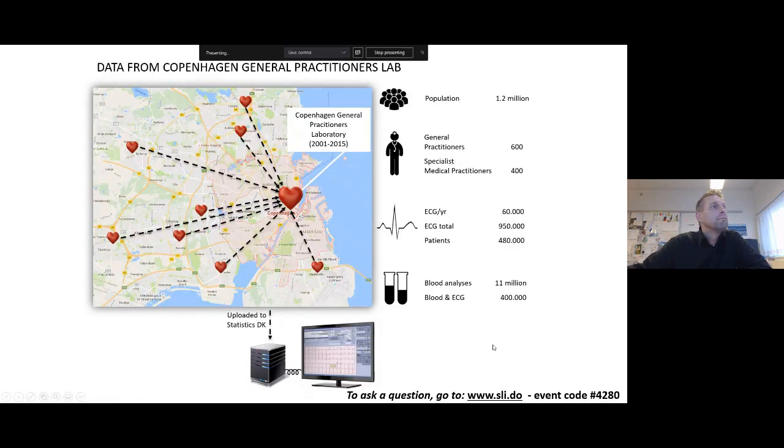So here's a map of the data that we transferred. All 600 general practitioners in Copenhagen, including the 400 medical practitioners, they refer their patients to eight labs in Copenhagen. And then all the ECGs are collected in a centralized lab also located in Copenhagen. So over the period of 15 years, 950,000 ECGs were collected from about 480,000 patients. We were also so fortunate that the labs gave us access to blood work. So we have both the ECG and blood from about one third of the population of Copenhagen.